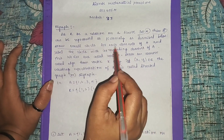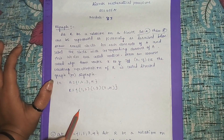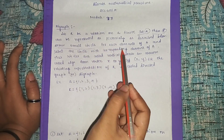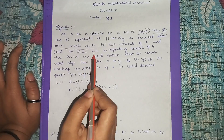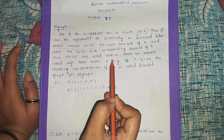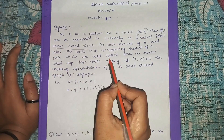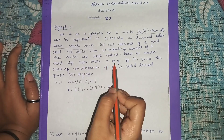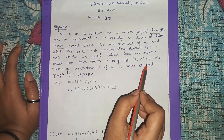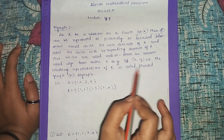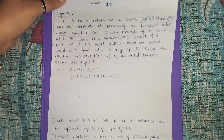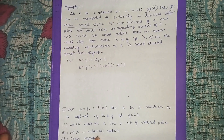To represent it pictorially: draw a small circle for each element of set A and label the circle with the corresponding element. These circles are called vertices. Draw an arrow, called an edge, from vertex x to vertex y if and only if the ordered pair (x, y) belongs to R. The resulting representation of R is called the directed graph or digraph.